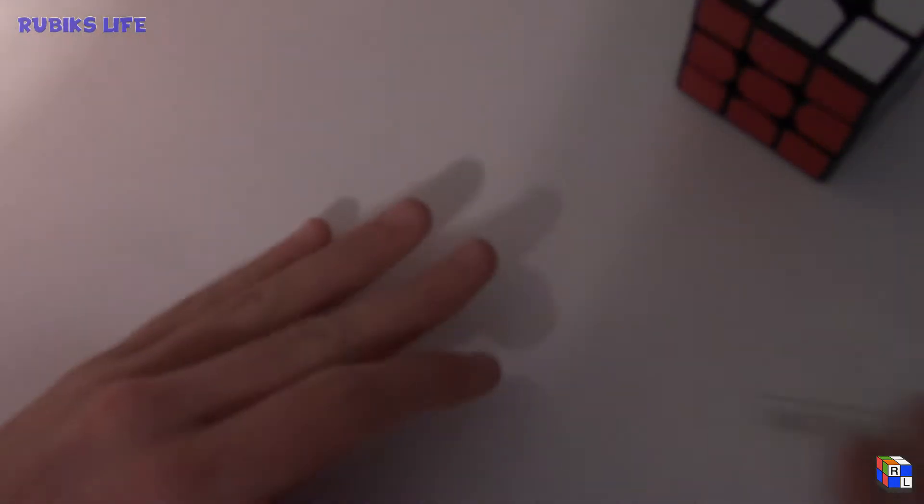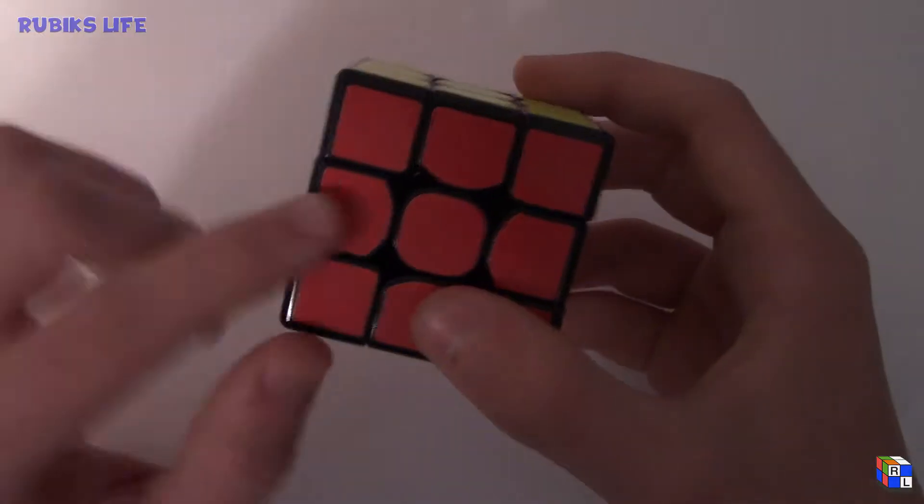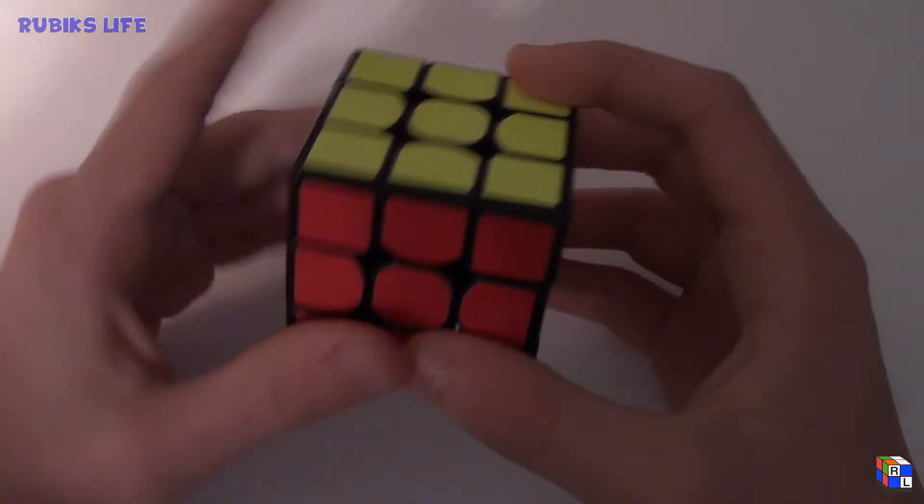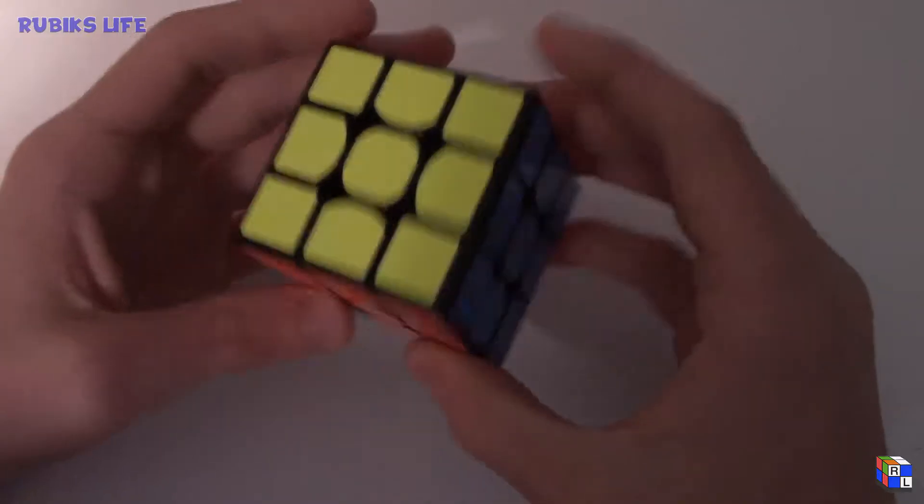Now to the actual cube. This is the Moyu Weilong GTS with the new squared off corners because everybody these days loves the squared off corners.